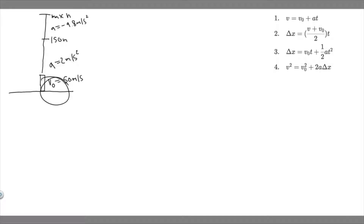For Part A: after the engine stops at 150 meters, its acceleration is going to be 9.8 meters per second squared downward due to gravity, because the engine is off. However, the rocket is still going to travel upwards because the velocity will still be positive.